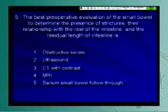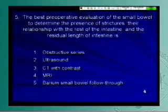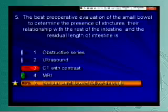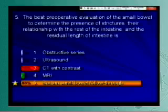The best preoperative evaluation of the small bowel to determine the presence of strictures, their relationship with the rest of the intestine, and the residual length of intestine is the small bowel series. Nowadays, radiologists may argue that point a little bit. With the reconstitution to make the CT scan look exactly like a small bowel series, they think they can do exactly the same job, and they're probably right. From a surgical perspective, we like to actually see this relationship — we see it a little bit better with the contrast layer.